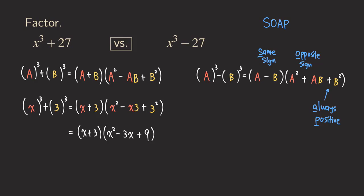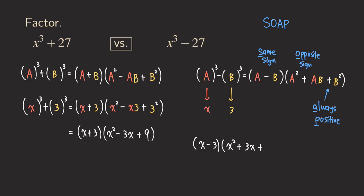Now for x³ − 27 — we can do this quickly. X is still A and B is still 3. We already put the minus sign in the formula, so we treat B as 3, not negative 3. Filling in: the answer is (x − 3)(x² + 3x + 9). I didn't show as many details as the previous example because once we understand the idea, we can go faster without needing to plug everything into the formula step by step.